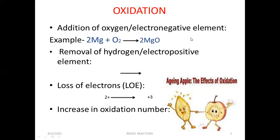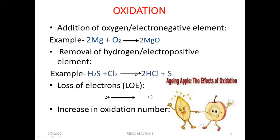Electronegative elements are mostly non-metals, for example sulfur gas, nitrogen gas, or oxygen gas. These are all electronegative. Whenever these elements are added to another element or compound, the process is known as oxidation. The second aspect is removal of hydrogen or an electropositive element. For example, hydrogen sulfide plus Cl2 gives us HCl plus S. Here, hydrogen is removed from hydrogen sulfide, so this process is known as oxidation.